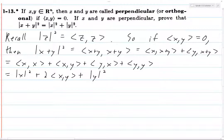But the inner product of x and y is zero, so this is just x squared plus y squared. Alright, so that's it.